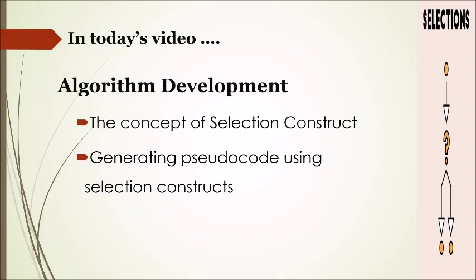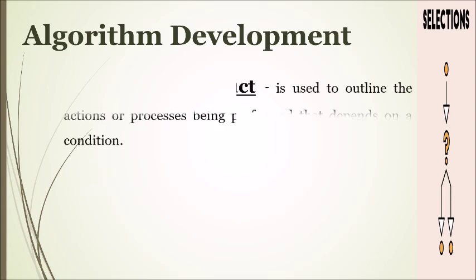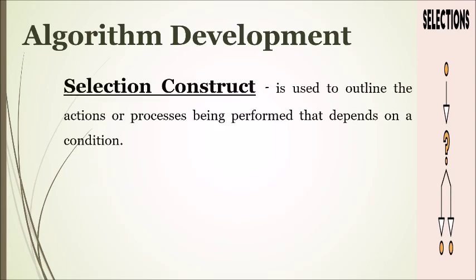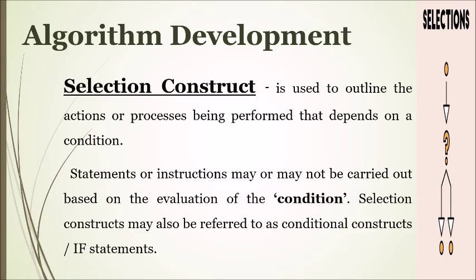In today's video we'll be looking at the concept of selection construct and also generating pseudocodes using selection construct. Selection construct is used to outline the actions or processes being performed that depends on a condition. Statements or instructions may or may not be carried out based on evaluation of the condition. Selection constructs may also be referred to as conditional constructs or if statements.